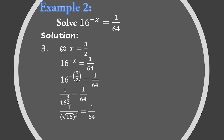We simplify 16 raised to 3/2 as the square root of 16 raised to the 3rd power — since a fractional exponent can be written as a radical. The square root of 16 is 4, so we get 1 over 4 raised to 3, which equals 1 over 64. So 1 over 64 equals 1 over 64 — the solution x = 3/2 is correct. Now let's move on to Example 3.